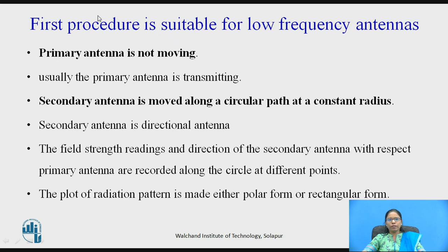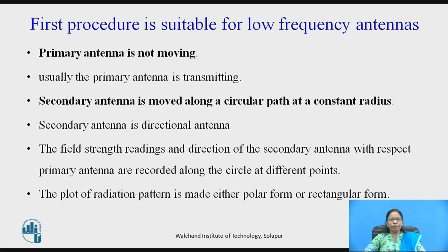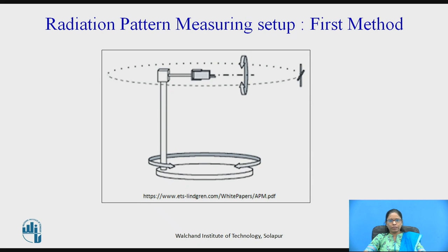Let us see the first procedure, which is used for low frequency antennas. Here the primary antenna is not moving. Usually we use the primary antenna as the transmitting antenna, and the secondary antenna is moving in a circular path at a constant rate. The field strength readings and the direction of the secondary antenna with respect to the primary antenna are recorded along the circle at different points. The plot of the radiation pattern is made either in polar form or in rectangular form.